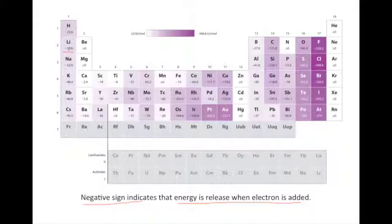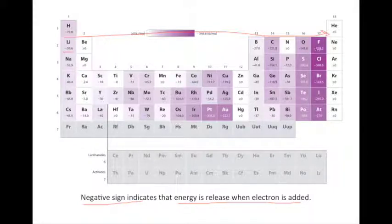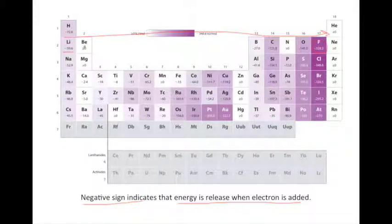For example, for lithium, 59.6 kilojoules of energy is released when lithium accepts an electron. If you look at these values, they tend to increase from left to right across a period. As these values get more and more negative, that means it gets easier for the atom to accept an electron. Fluorine releases more energy when it accepts an electron than lithium, indicating that fluorine will accept an electron much more readily. Overall, the electron affinities tend to increase across a period.